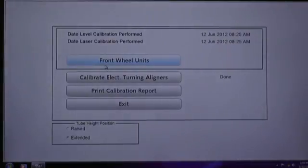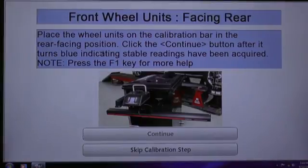The first step is to calibrate the front wheel units. The following screen prompts you to put the wheel units on the calibration bar in the rear-facing position.